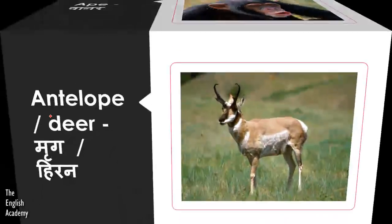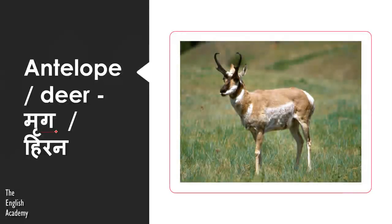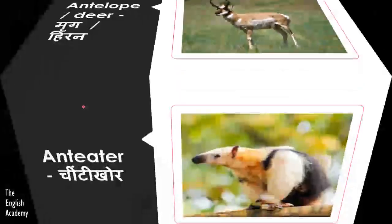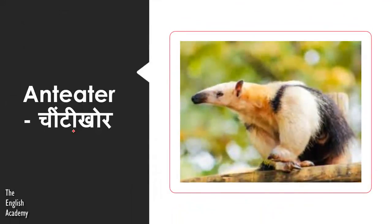Then we have Mrig or Hiran. This is Antelope or Deer. Next animal is Chinti Khor — this is Ant Eater.